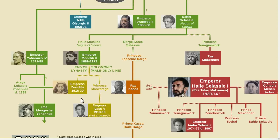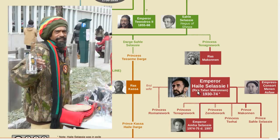So his aunt Zuditu became reigning empress instead. Her first husband had been the son of Johannes IV. But because Ethiopia had always been ruled by a male, this man here, originally known as Ras Tafari, was made regent and heir. Even if you previously knew nothing about Ethiopian history, the name Ras Tafari is probably familiar to you. We'll get to that in a second.